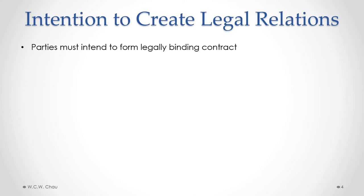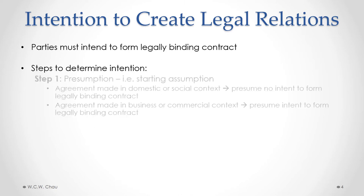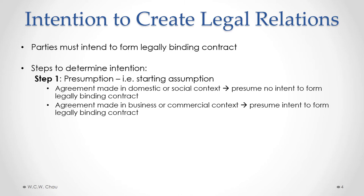So how do we go about ascertaining whether or not someone actually intended to form a legally binding contract? The courts have developed a two-step process to determine intention. The first step is to start with a presumption — a starting assumption — and that presumption depends on the type of situation in which the agreement was made. If the agreement was made in a domestic or social context, we presume there was no intent to form a legally binding contract. If the agreement was made in a business or commercial context, we presume the opposite — that there was intent to form a legally binding contract.